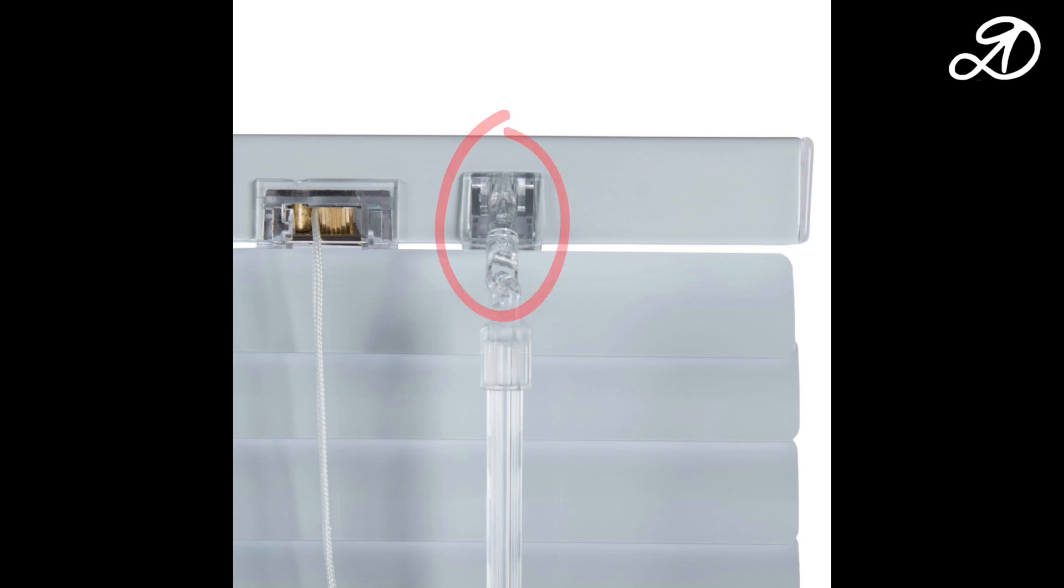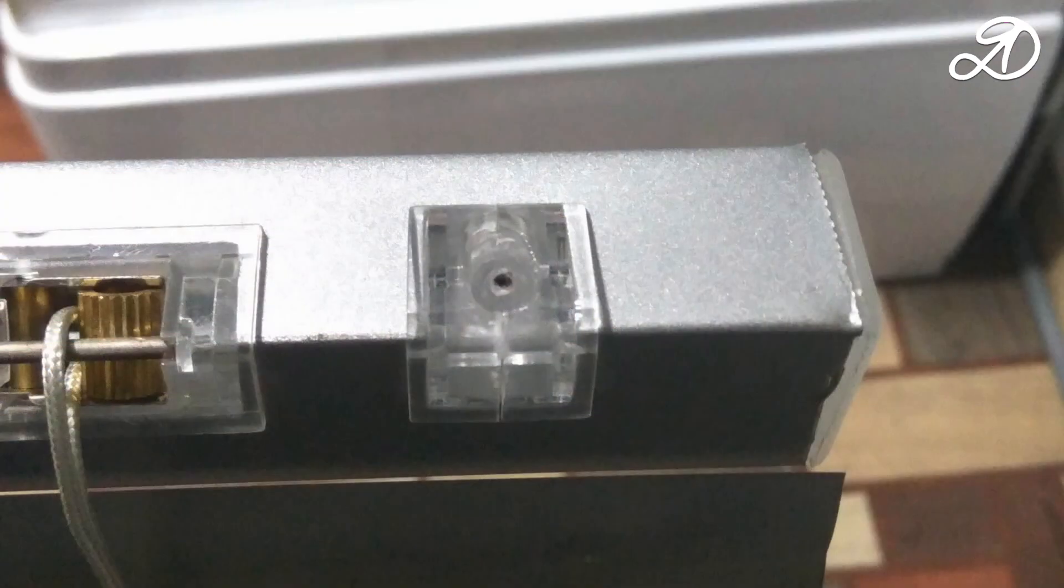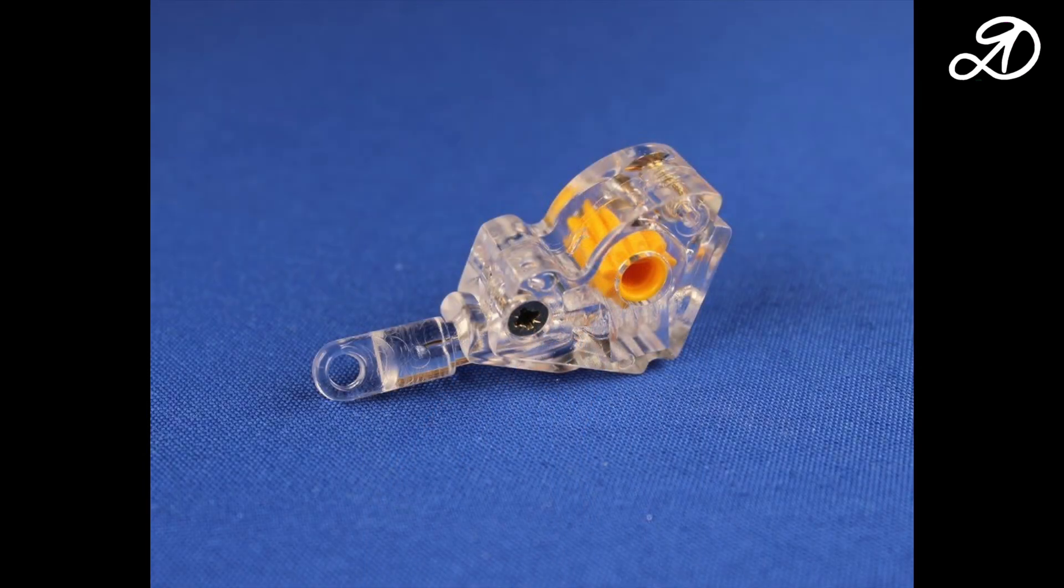Hi guys! The tilt mechanism of the horizontal blinds was broken, namely the hook itself. It looks like this. This mechanism can be purchased separately, but in my city there are no such.